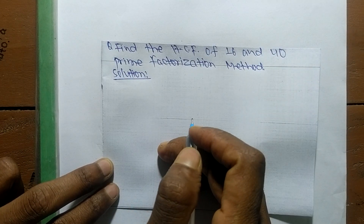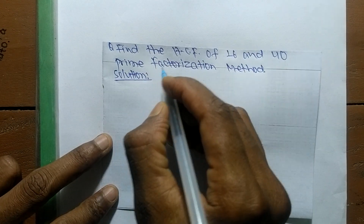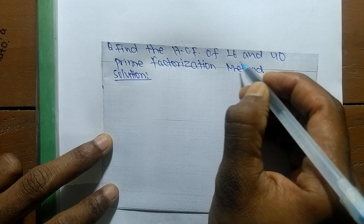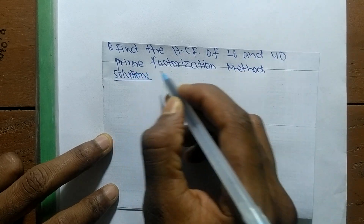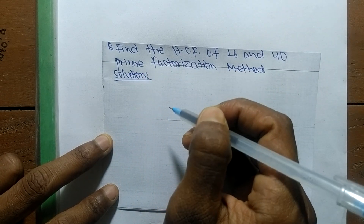Today in this video we shall learn to find the HCF of 16 and 40 by the prime factorization method.